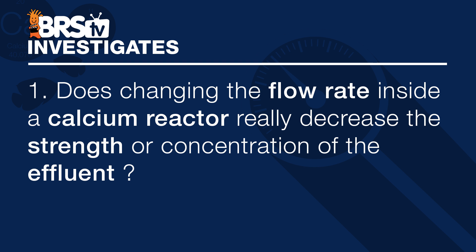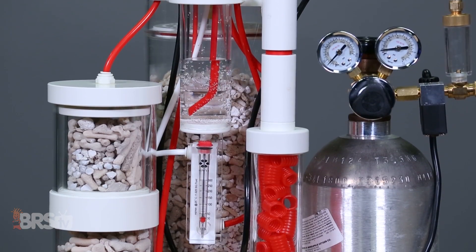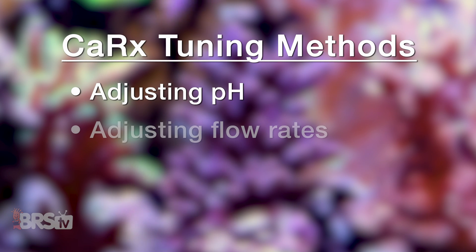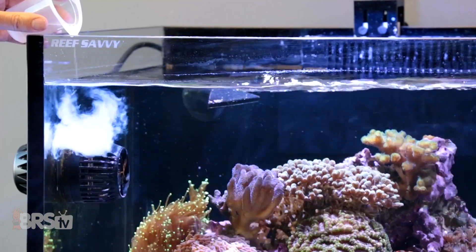Today we plan to assign some actual numbers to this thought process in order to see how impactful changing the flow rate is, and if it's even to a degree that's valuable for reefers to concern themselves with when adjusting a calcium reactor. The question is: does changing the flow rate inside a calcium reactor really decrease the strength or concentration of the effluent? If we can identify that tuning a reactor is as simple as creating a stable concentrated solution with a pH probing controller and determining a dose rate, then there should be no reason why a calcium reactor needs to be considered complex — and in some ways it may require less maintenance than standard two-part.